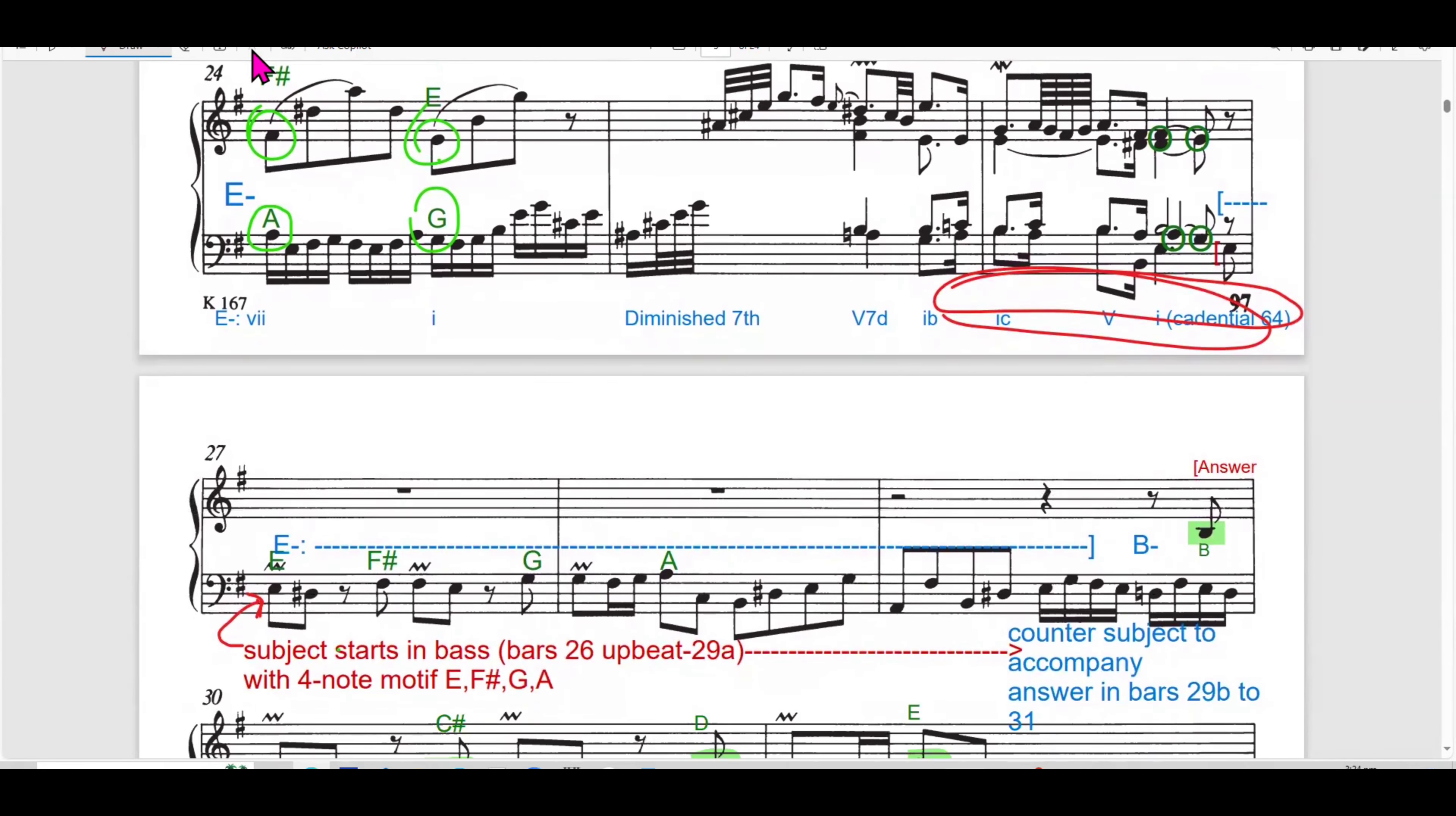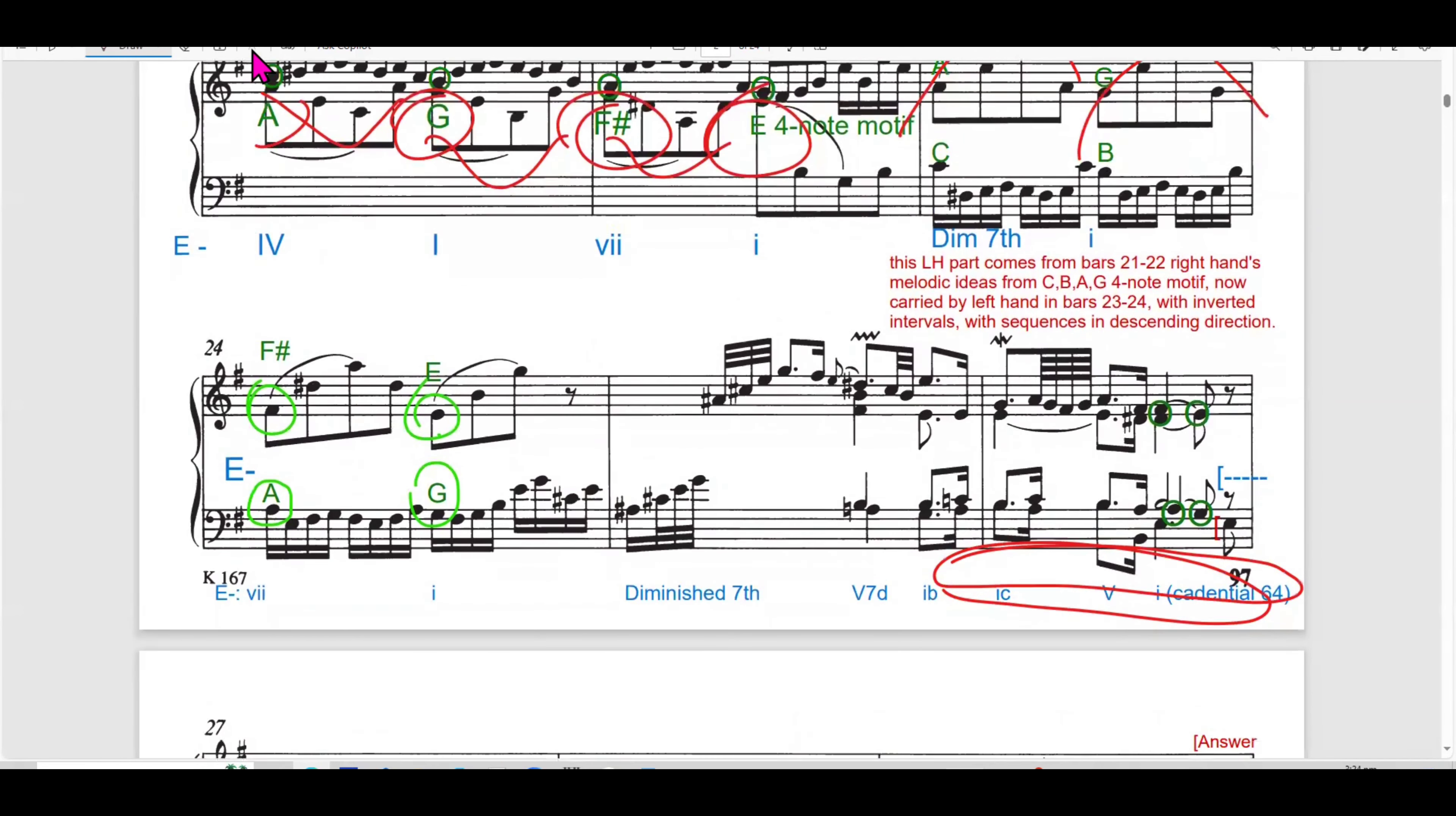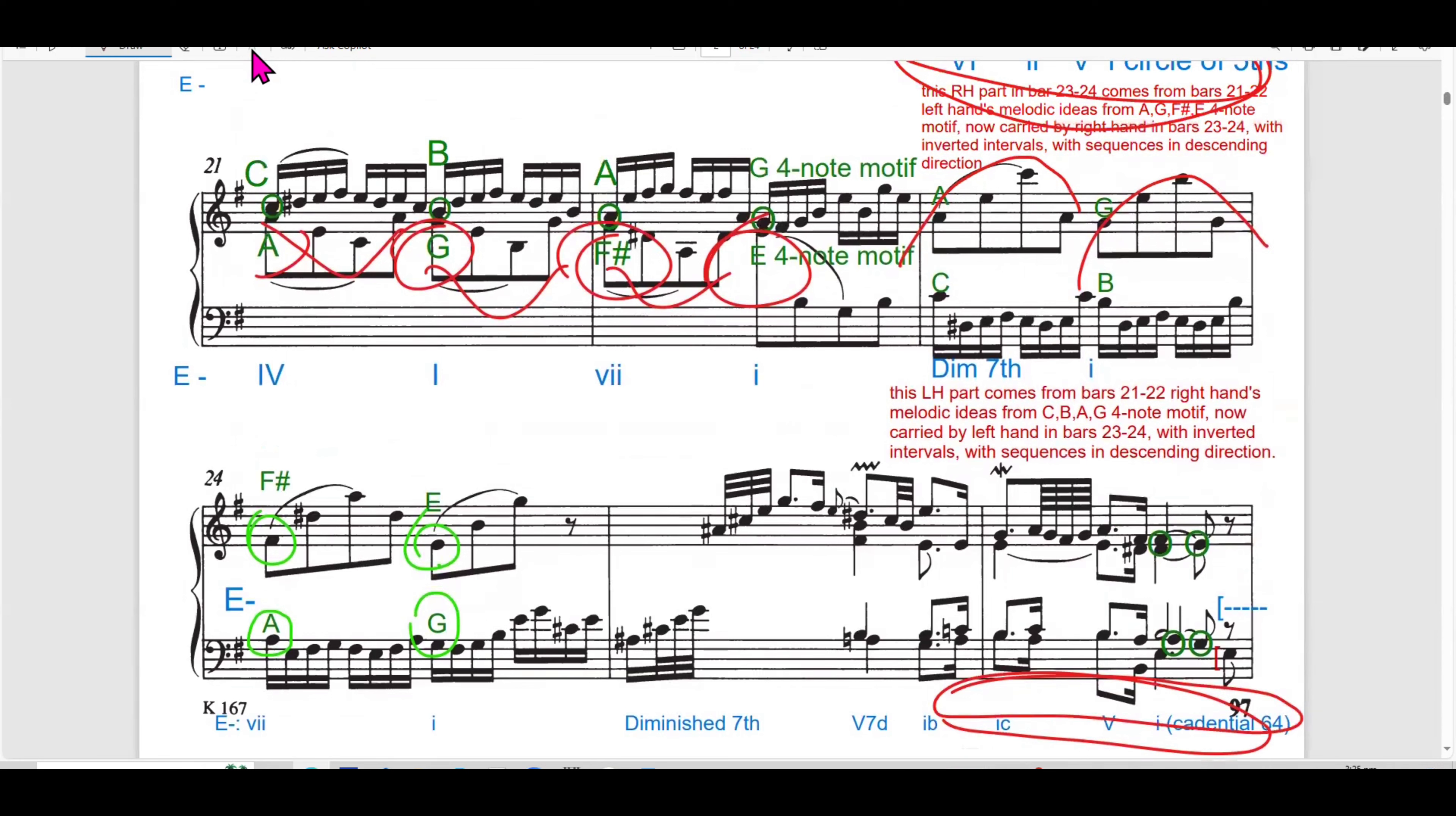So, and descending sequences. The material from bar 21 to 22 is now inverted and expanded. So, in bar 21 to 22 is going this way. The melodic shape is going this way. But in 23 to 24, the melodic shape goes the opposite way, which is an inverted interval.